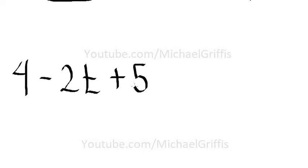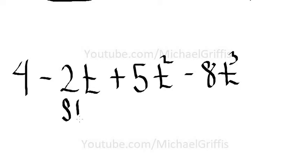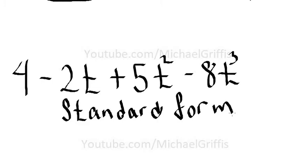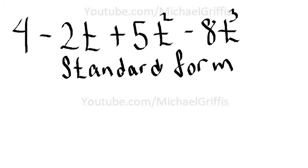Let's take a look at another one. Let's say we had 4 minus 2t plus 5t squared minus 8t cubed. Let's write this in standard form and then identify the leading coefficient.